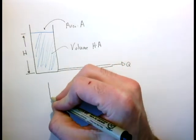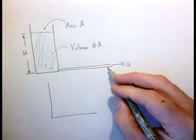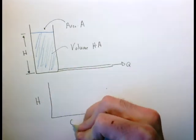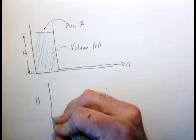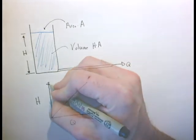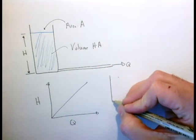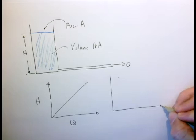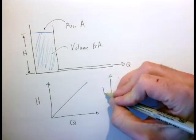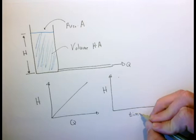In the last video, we saw experimentally that for a given tube, there is a linear relationship between the flow rate of water coming out of the tube and the height of the water in the tank. Now let's consider a slightly different experiment where we simply monitor the height in our container as a function of time.